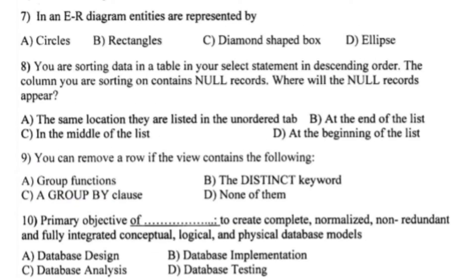In an ER diagram, entities are represented by — write optional B — rectangle.